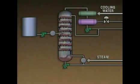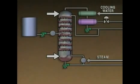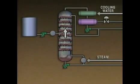Another pressure that's important to an operator is the tower's differential pressure. The tower's differential pressure is the difference between the pressure at the bottom of the tower and the pressure at the top of the tower. This difference in pressure is caused by the flow of vapors in the tower. Without vapor flow, there is no differential pressure. Generally, if the rate at which the vapors move up the tower decreases, the differential pressure will also decrease. And if the rate at which the vapors move up the tower increases, the differential pressure will increase.